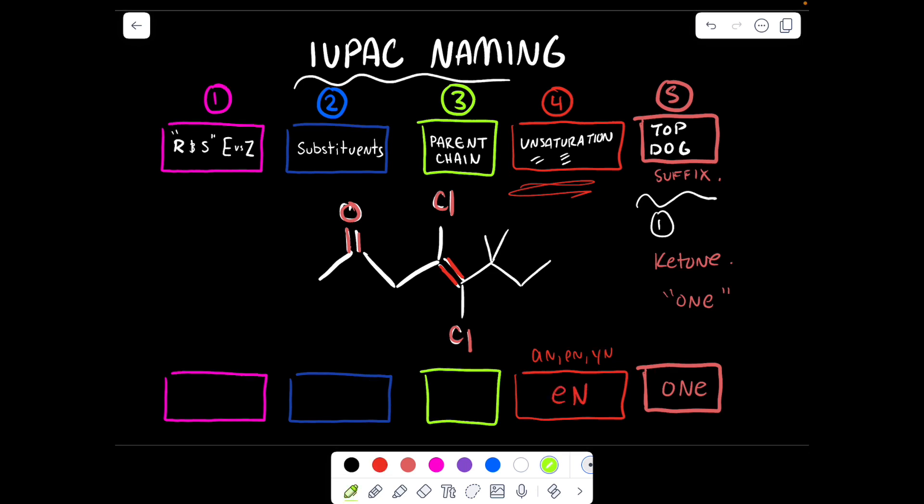Now we must find the parent chain. This is going to be the largest unbreakable chain in the molecule. We want the top dog functional group to also be on the lowest number we can achieve. So I would want this guy to be number two. One, two, three, four, five, six. Oh, I'm at a crosshair. I could go this way or I could go this way.